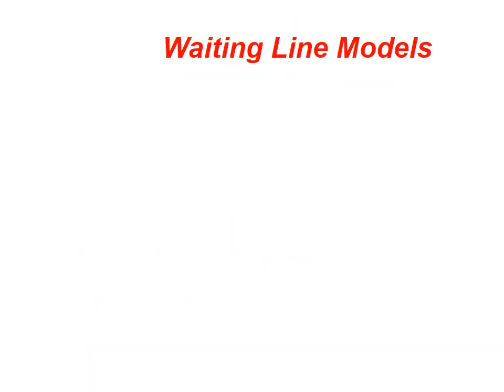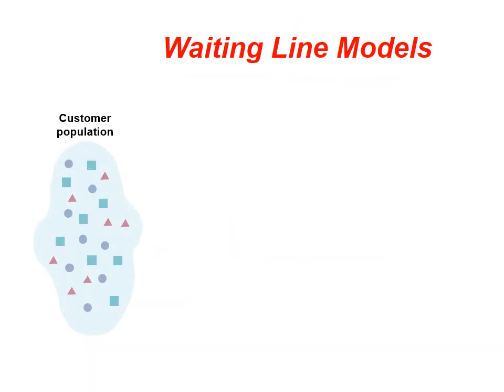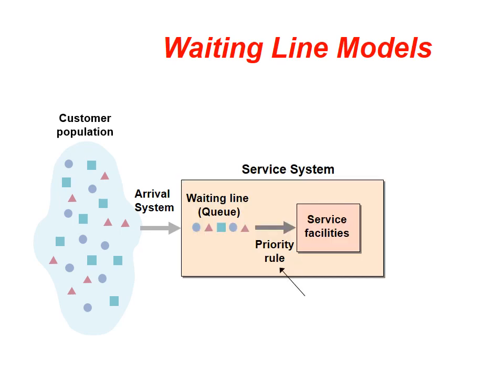Waiting line models consist of: customer population, arrival system, service system, waiting line queuing, priority rules, service facilities, and finally, service customers.